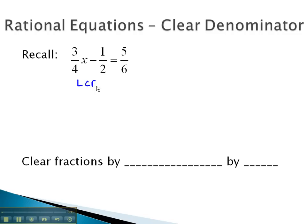We would find the least common denominator. In this case, it would be 12, and we multiplied each fraction, or each term would be a better way to say it, by 12.